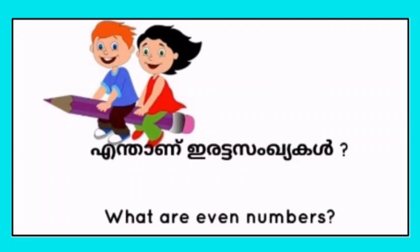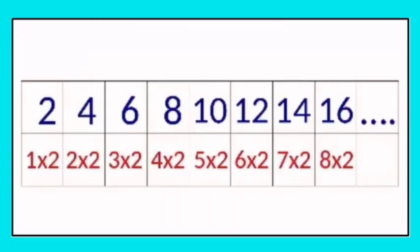What are even numbers? Even numbers are: 2, 4, 6, 8, 10, 12, 14. We can express them as: 2×1=2, 2×2=4, 2×3=6, 2×4=8, 2×5=10, 2×6=12, 2×7=14.